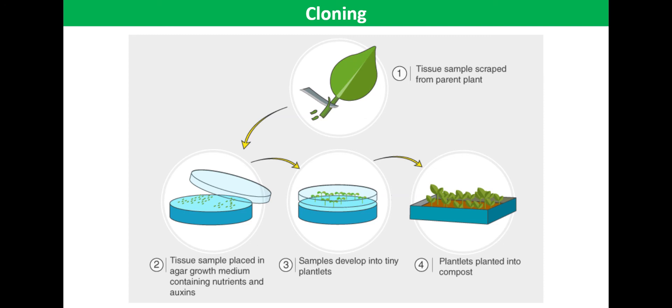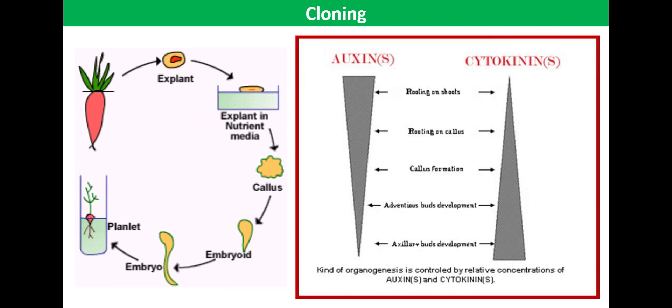This is achieved by moving the cells to different growth medium. Each media contains different ratios of auxin and cytokinin. If you have a ratio, for example, of 100 auxin to 1 cytokinin, this will stimulate roots to form. If you have a ratio of 4 auxin to 1 cytokinin, this would stimulate shoots to form.